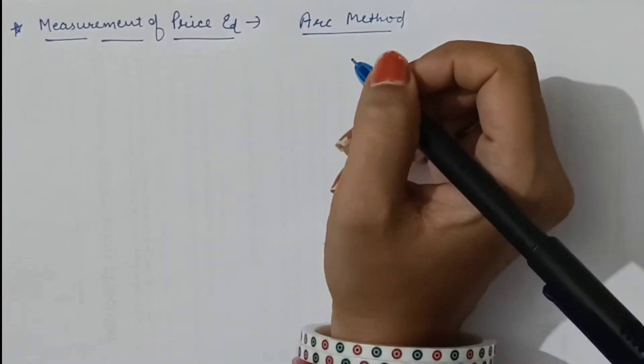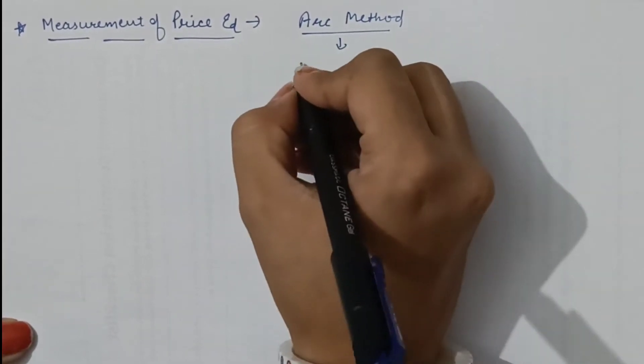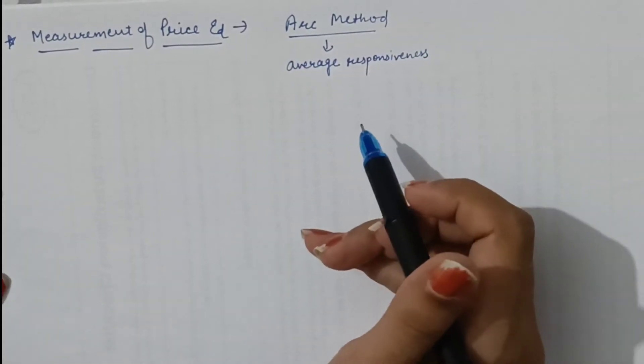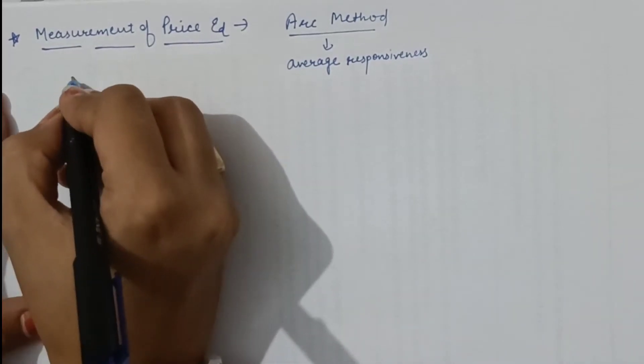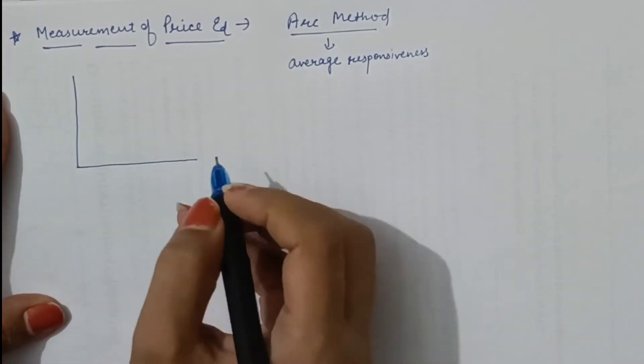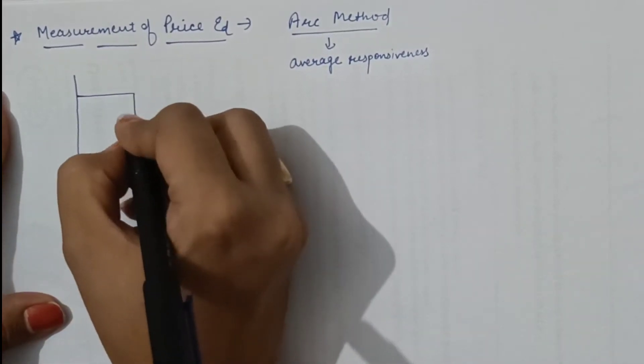The ARC method of measuring price elasticity of demand is dependent on average responsiveness to price change. Before starting this method, we need to understand the meaning of ARC. First, we will draw out a demand curve.